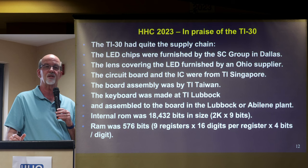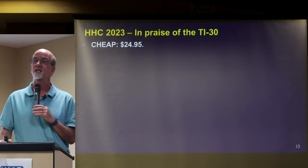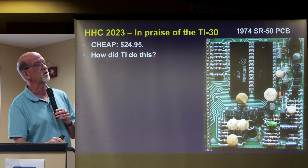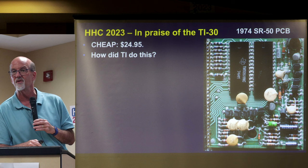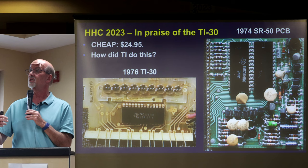Cheap — this was the key point. $24.95 was the MSRP when it was introduced in 1976. How did TI make that so cheap? Here's a picture of the PCB from the SR-50 in 1974 — capacitors and resistors all over the place, a couple of chips. Two years later, this is the TI-30: one chip, not a single other item on that board. It's incredible — that's what technology did in two years. The SR-50 introduced at around $150; the TI-30 was $24 two years later. TI's learning curve applied ruthlessly.